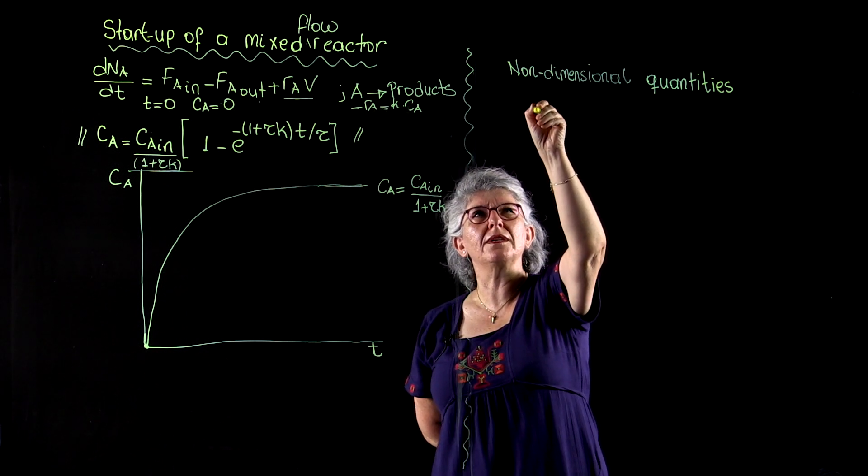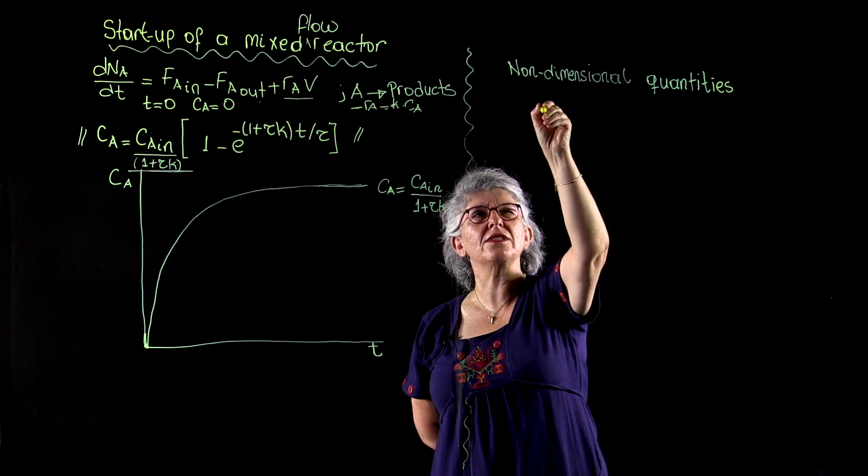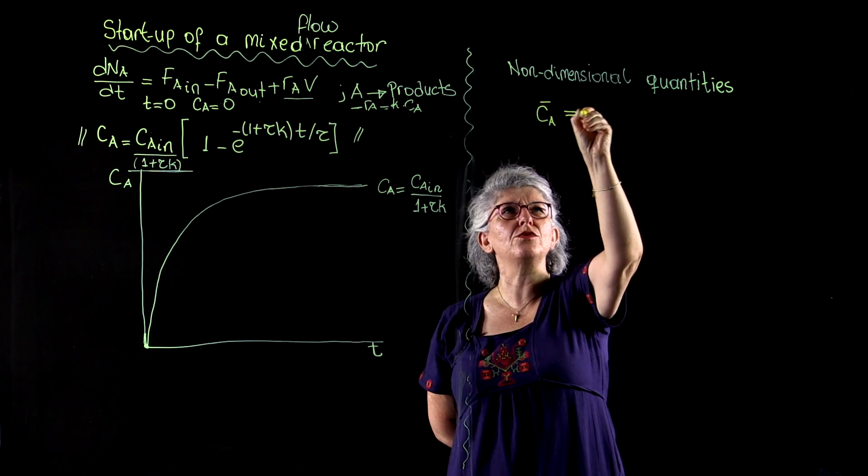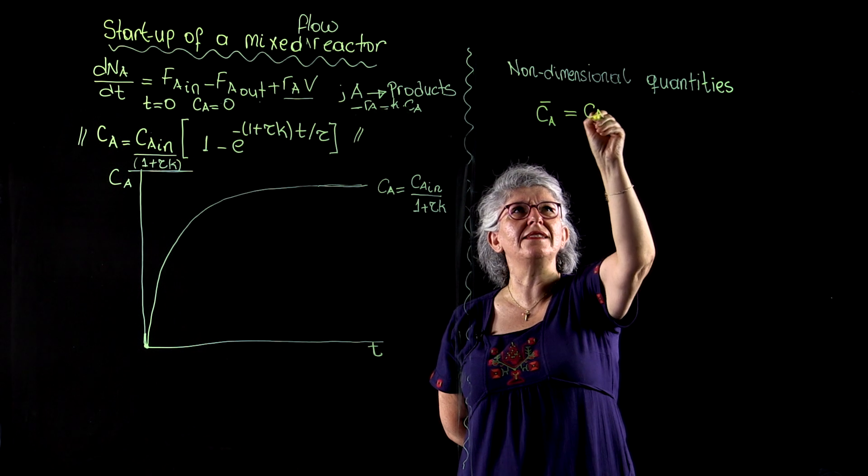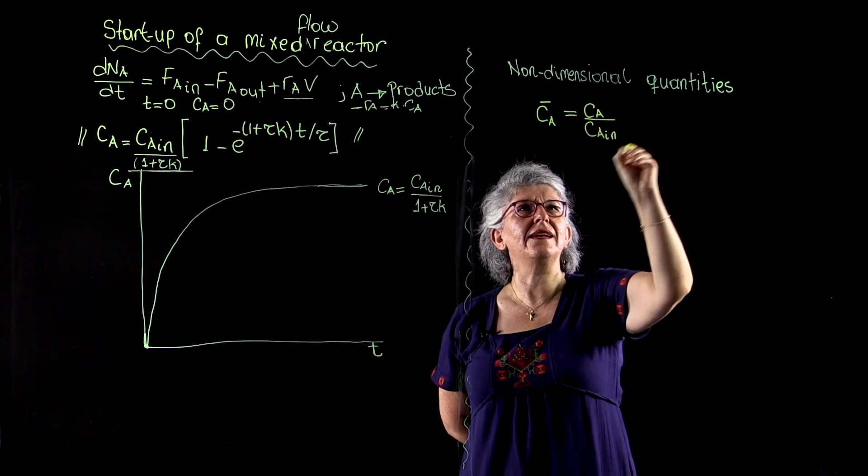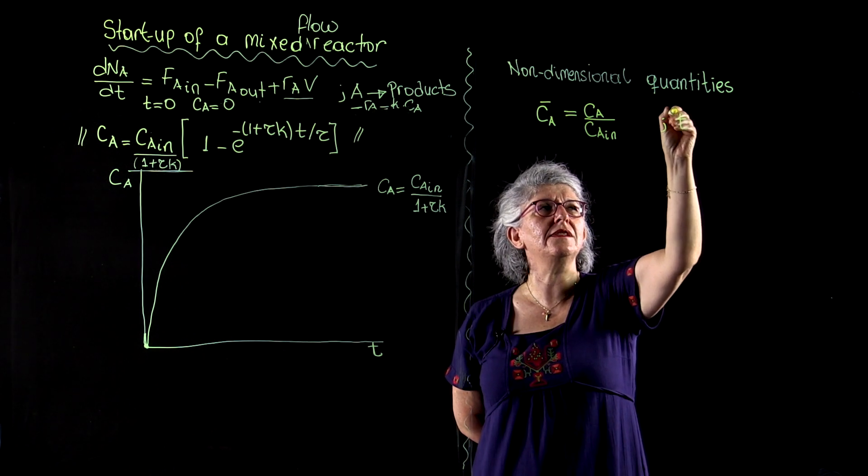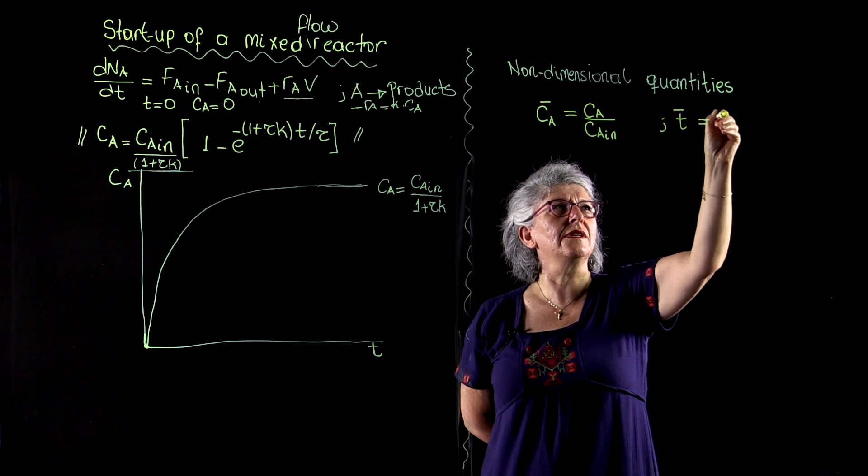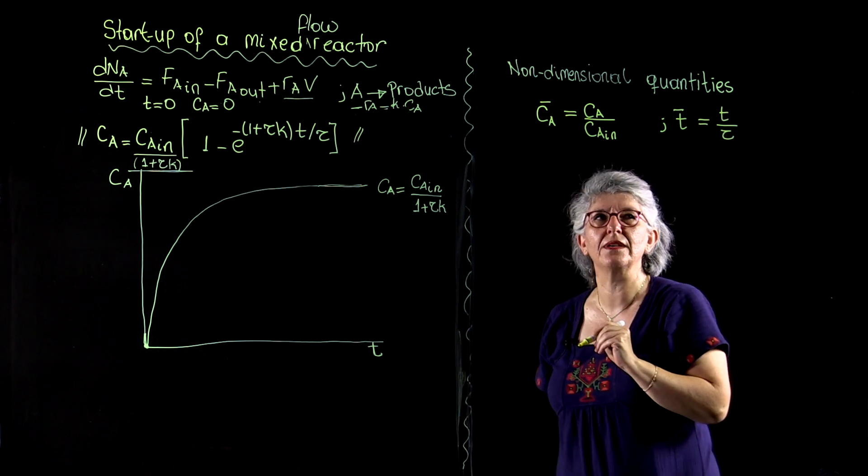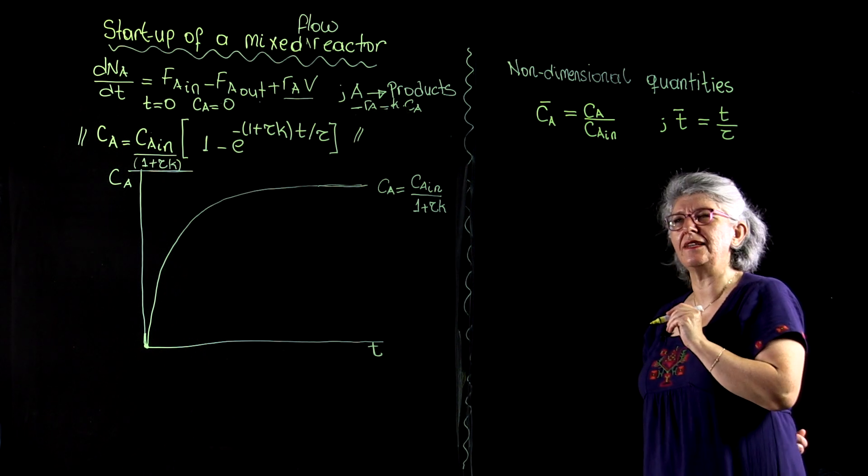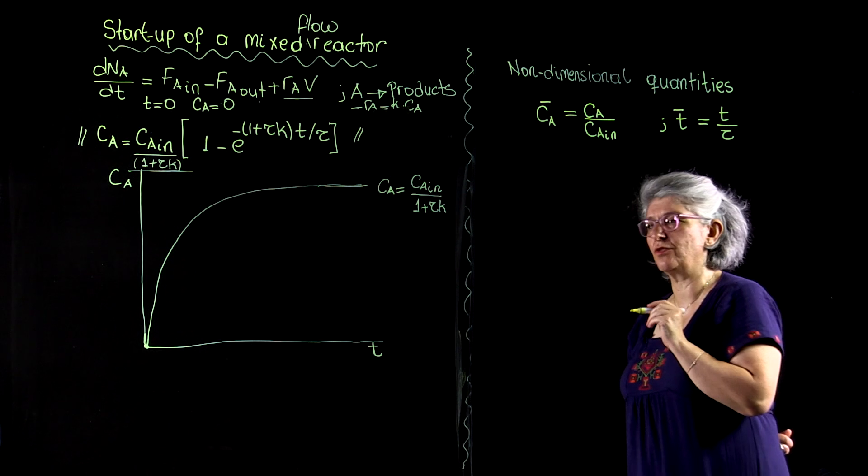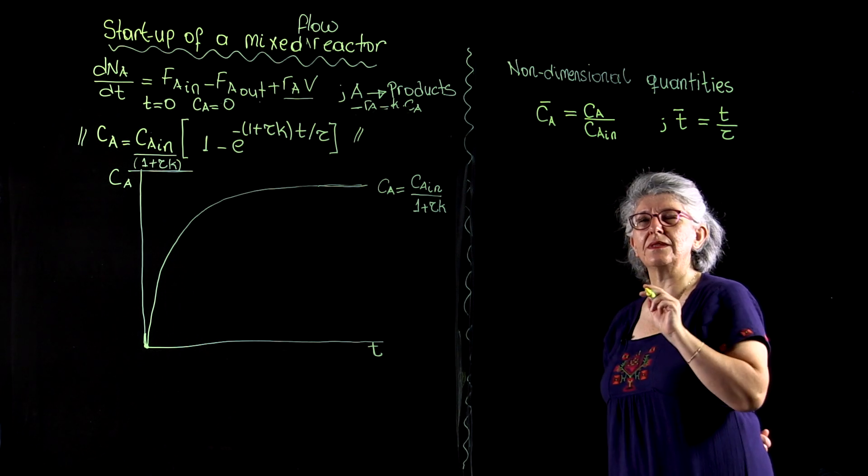One of them is a non-dimensional concentration. I will call that CA bar. That is going to be CA divided by CA in. And the other one is T bar. It is going to be T over Tau. Now, so I non-dimensionalized the dependent and independent variables with respect to our reactor conditions.